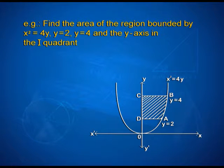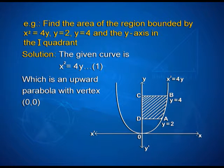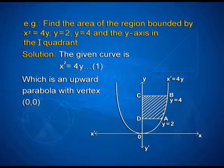Another example: find the area of the region bounded by x² = 4y, y = 2, y = 4, and the y-axis in the first quadrant. For the solution, the given curve x² = 4y is an upward parabola with vertex at the origin (0, 0), and y = 2 and y = 4 are the lines. We are supposed to find the shaded area ABCD.